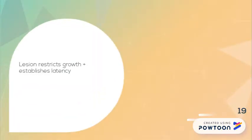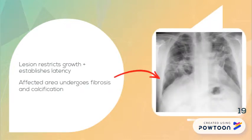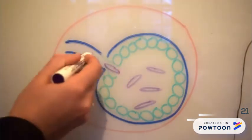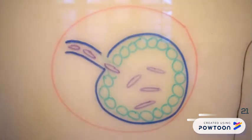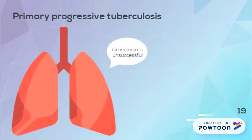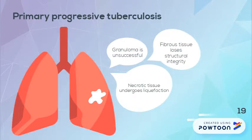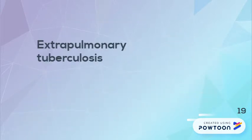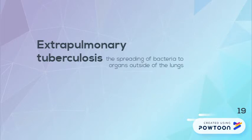The lesion restricts further growth and establishes latency. The affected area then undergoes fibrosis and calcification, trapping bacilli in dormant lesions. Sometimes, however, the bacteria can change their phenotypic expression to adapt for survival. In primary progressive TB, the granuloma is unsuccessful — necrotic tissue undergoes liquefaction and fibrous tissue loses structural integrity. The necrotic liquid may drain into a nearby bronchus or blood vessel, leaving an air-filled cavity at the site of initiation, increasing the likelihood of extrapulmonary TB, which involves the spreading of bacteria to organs outside of the lungs.